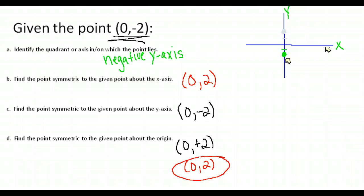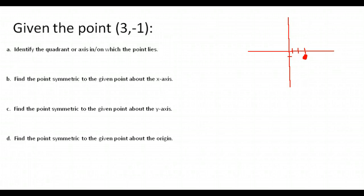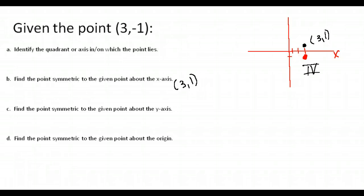Here is one last example. Given the point three, negative one — they want to know what quadrant it's in and list the points symmetric about the x-axis, y-axis, and origin. Point three, negative one moves us three to the right and down one from the origin. This point is in the fourth quadrant — quadrants are written in Roman numerals, so that's quadrant IV. Symmetric about the x-axis: this point is one below, so we need one above, which gives us the point three, positive one.